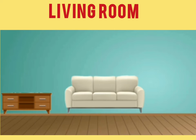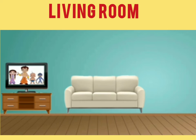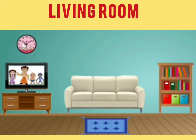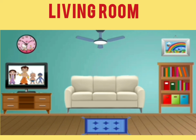Sofa. This is a sofa. Television. This is a television. Carpet. This is a carpet. Wall clock. This is a wall clock. Bookcase. This is a bookcase. Picture. This is a picture. Fan. This is a fan. So here we have completed arranging the things in our living room.